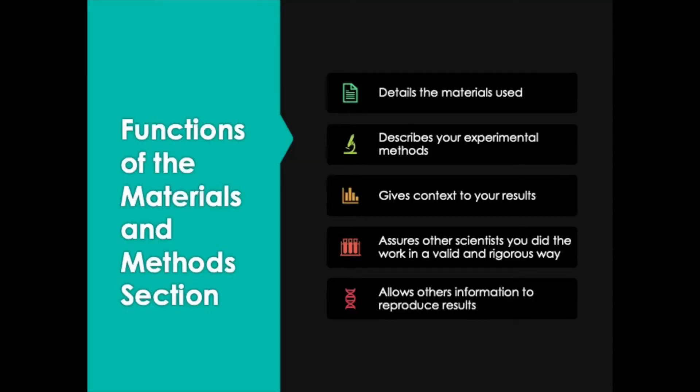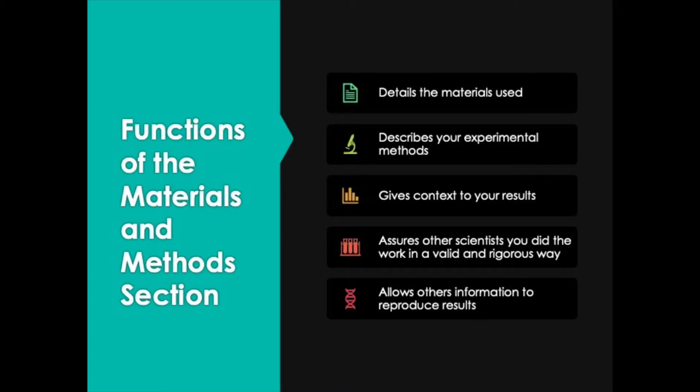Let's begin by taking a look at the functions of the Materials and Methods section. The first function is to detail the materials that you used in the work. Many of you in this course are in life sciences, and the materials you choose are very important — study organisms matter because different species and different strains or varieties behave differently. If you're in physical sciences or chemistry, the materials are equally important. So one main function is to very specifically explain which materials you used in your study.